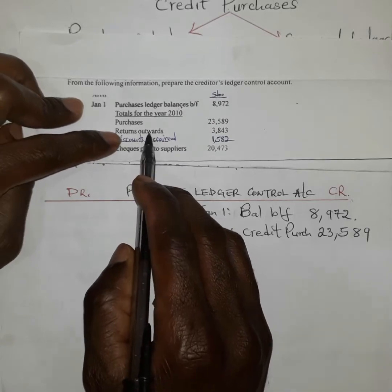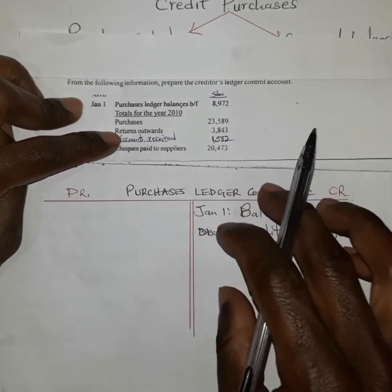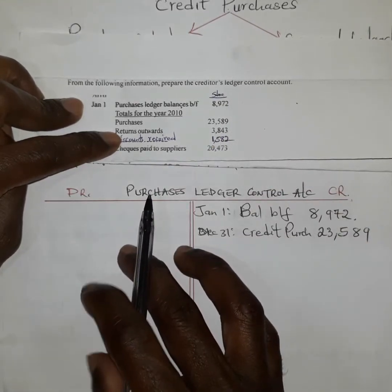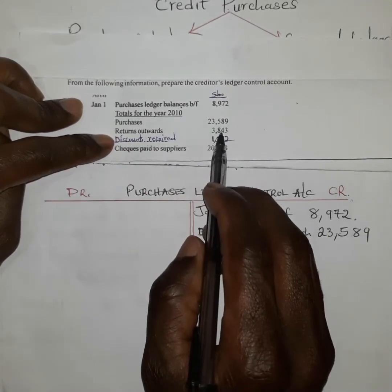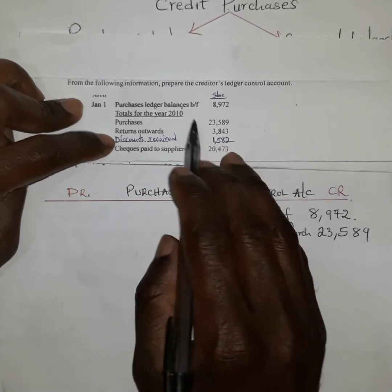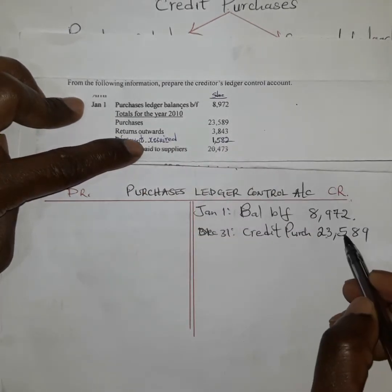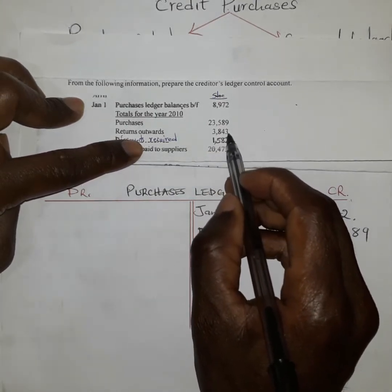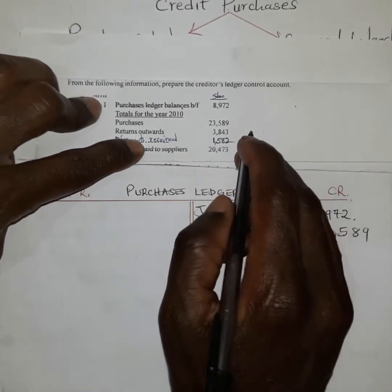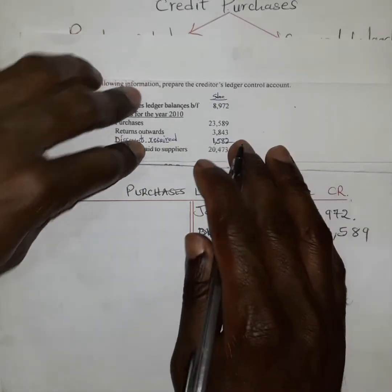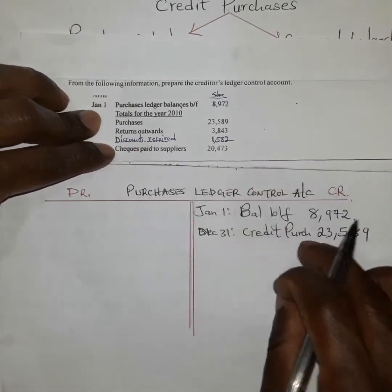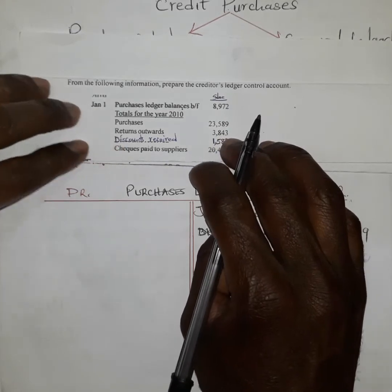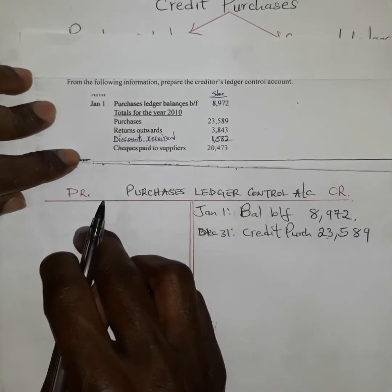Next, returns outwards. Returns outwards refers to those goods that were initially bought by the business but returned back — for example, goods that were expired, wrong quantity, or damaged. In this case, returns outwards are 3,843. Since they are part of the purchases that were returned, they reduce what the business will pay, so they are debited.